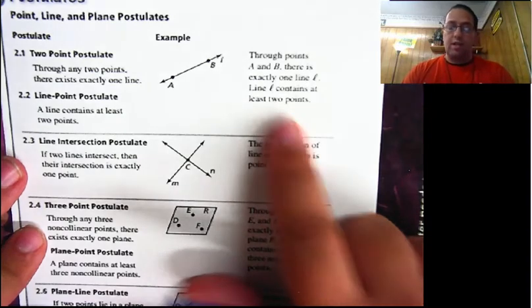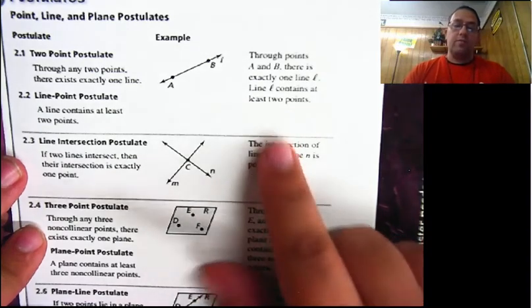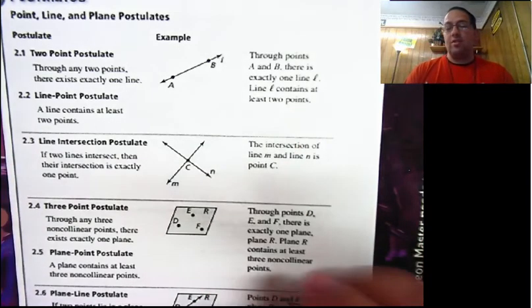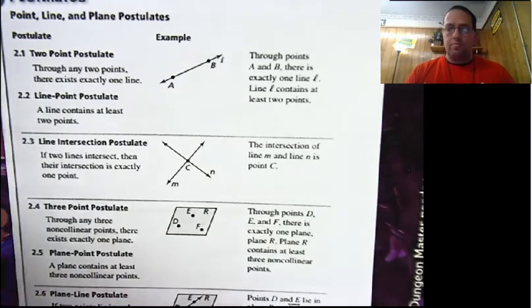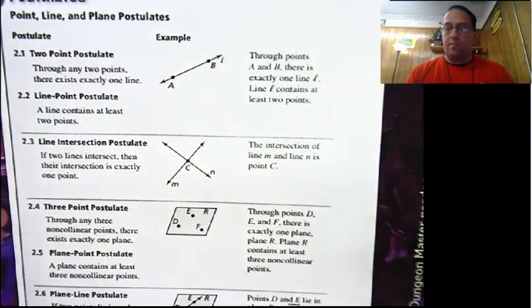We're not going to say 'at least two points A and B,' because that sounds like there's more than one A and more than one B, but only one point can have that name.